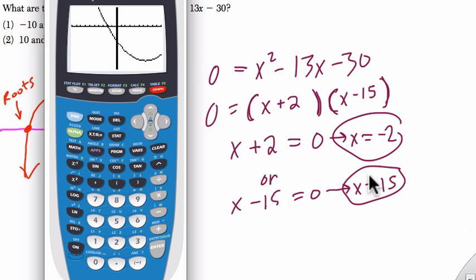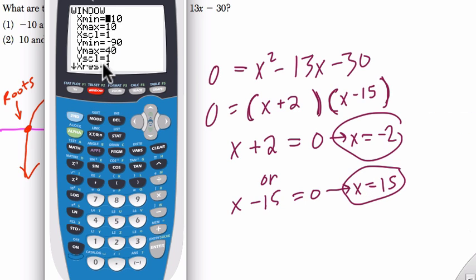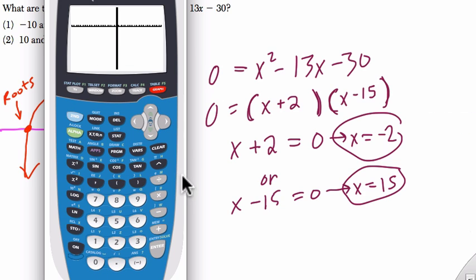Now we know that the roots are 15 and negative 2, so I have to expand my x window. But if you didn't know that, you can just try different extremes. I'll start with negative 20 and positive 20. This expands the domain. And now we can finally see the graph.